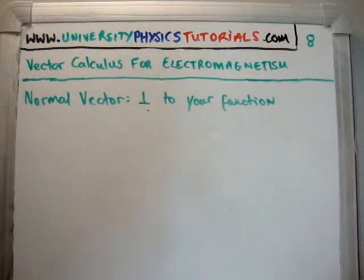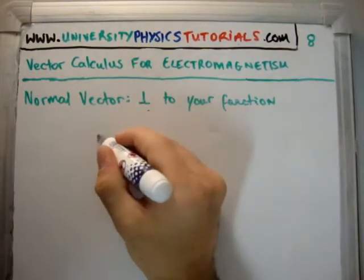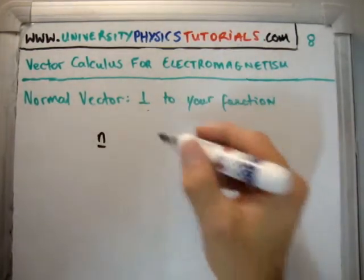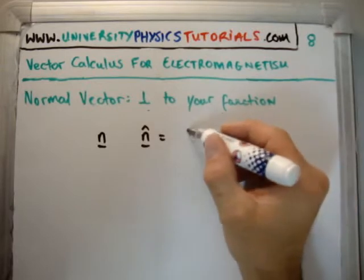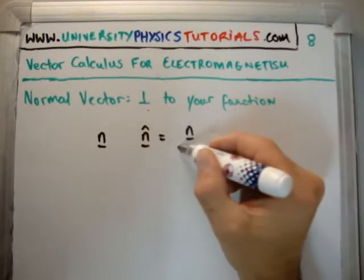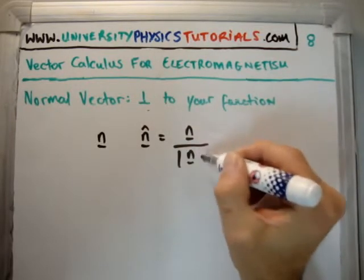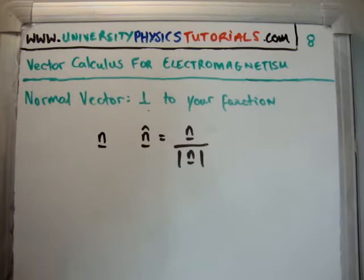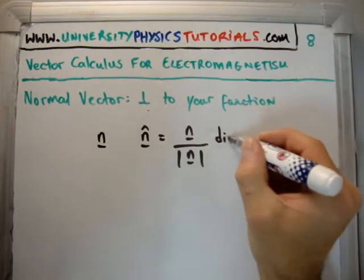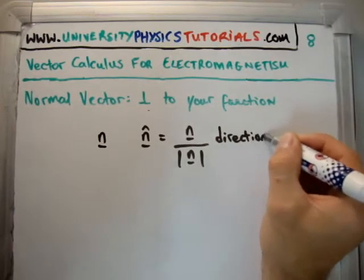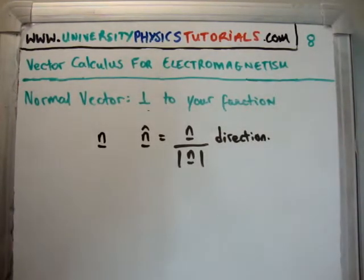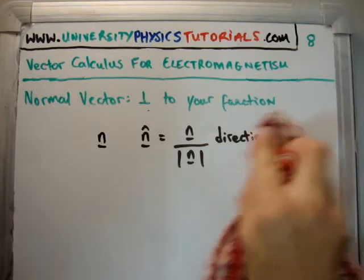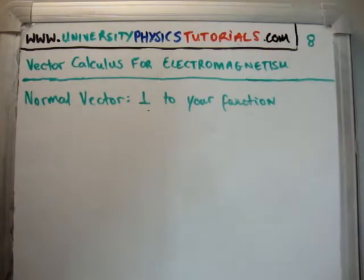If n is our vector, then n-hat is our unit vector — it has a magnitude of one, so n-hat equals n divided by the magnitude of n. You might ask why bother with a vector of magnitude one. The reason is we use its direction — we actually don't use its magnitude; the direction is the important point here.